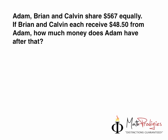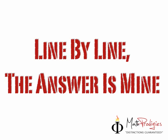Today's question of the day is something related to money — I love money, don't you? Adam, Brian, and Calvin share $567 equally. If Brian and Calvin each receive $48.50 from Adam, how much money does Adam have after that? Remember, the quote of the week is line by line, the answer is mine. Read the first line first, imagine it, then read the next line and so on. This is Coach Saiful signing off. You are a math prodigy. Good job.